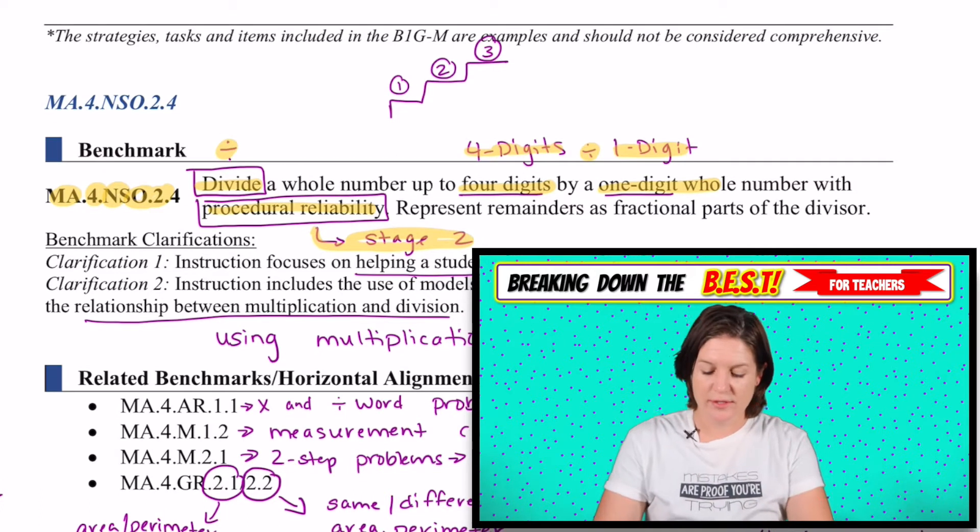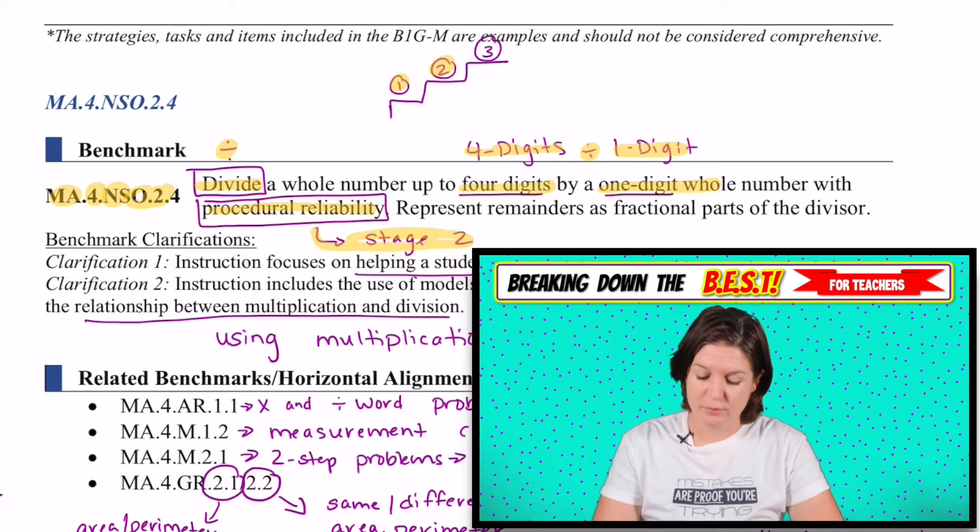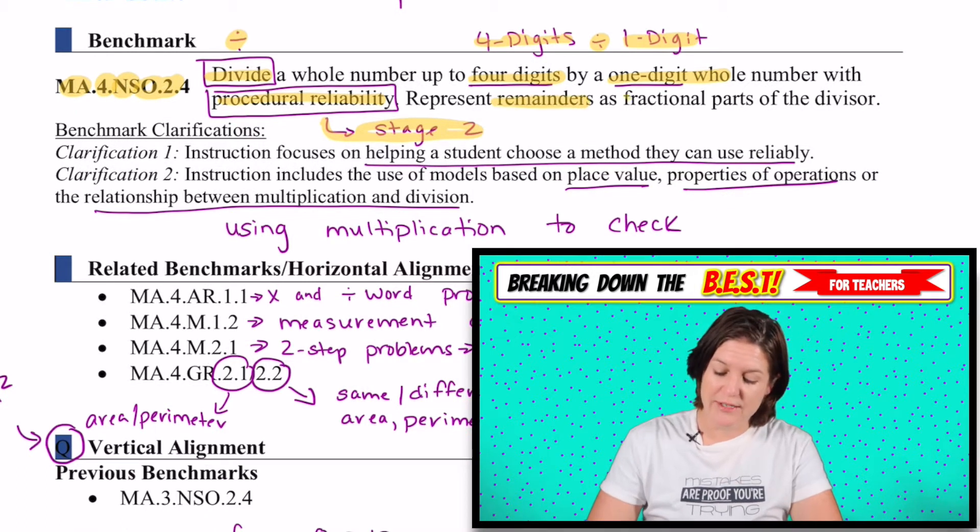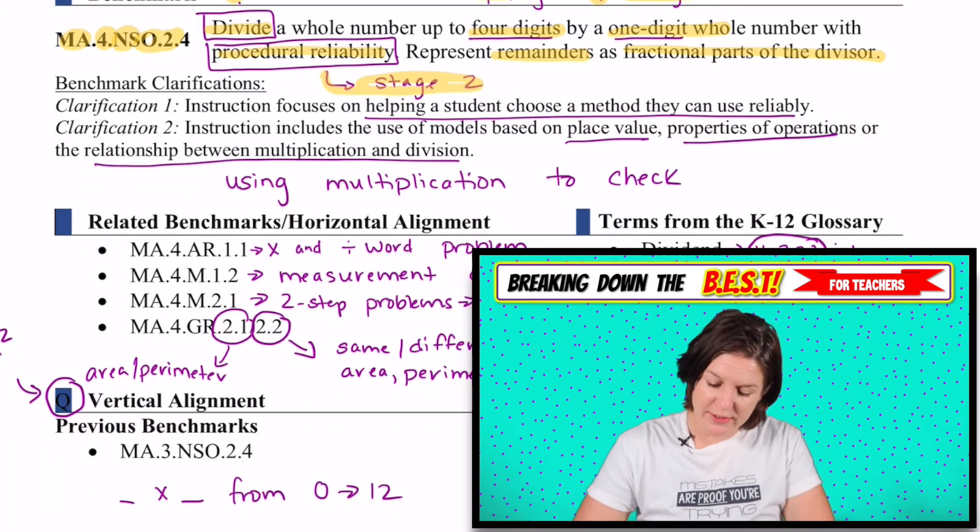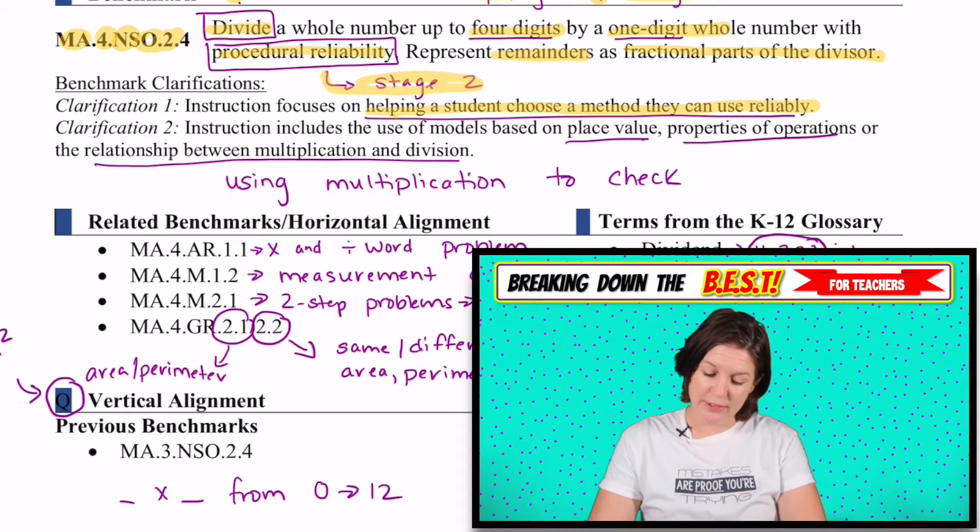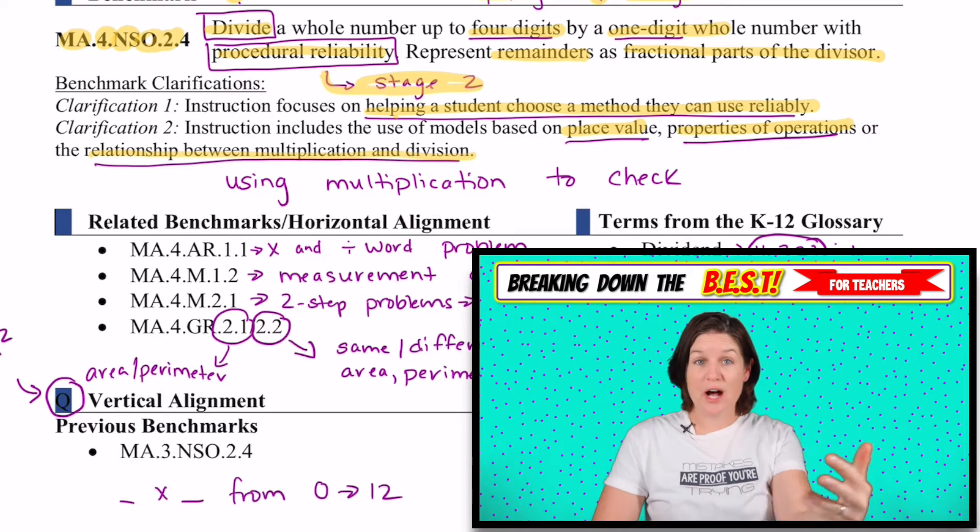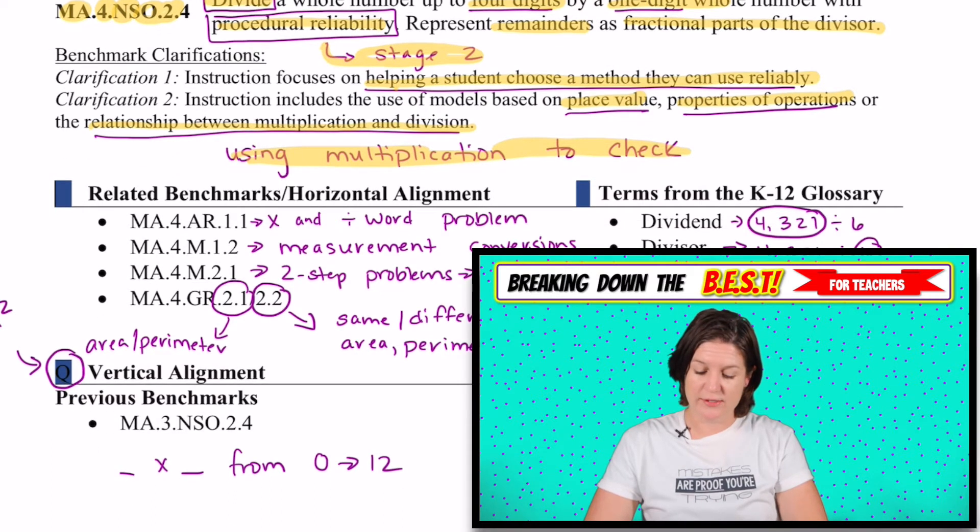That's stage two. If we're thinking about it like a staircase, the first step would be the exploration level. Step two is with a little bit more teacher support, here's a strategy that you can use to solve. And then step three would be procedural fluency. This is stage two, we will have to represent remainders as fractional parts of the divisor. The clarifications say we're focusing on instruction based on place value, properties of operations, and the relationship between multiplication and division, which is what's taking place in those video lessons that I'll show you.